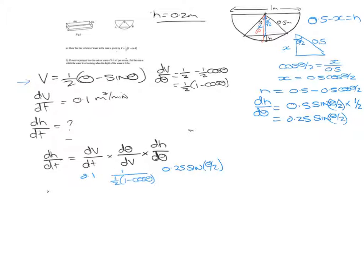So combining these, we now have dH by dt. Let's look at the top. We've got 0.1 times 1 times 0.25, so that gives us 0.025 sin theta over 2, over 0.5 brackets 1 minus cos theta.